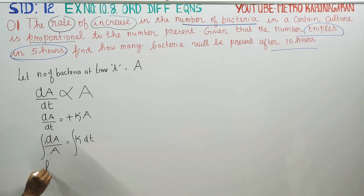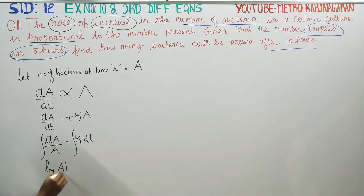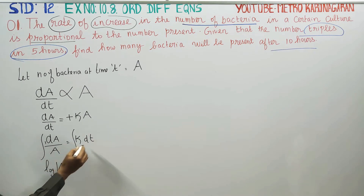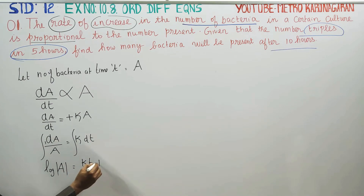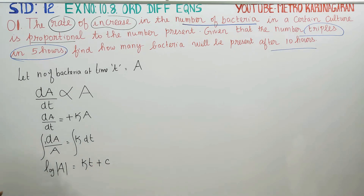Integrating both sides: the logarithm of A equals kt plus c.